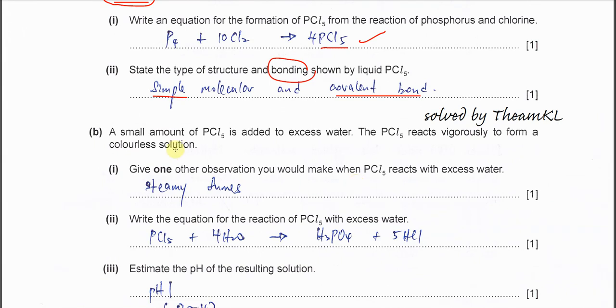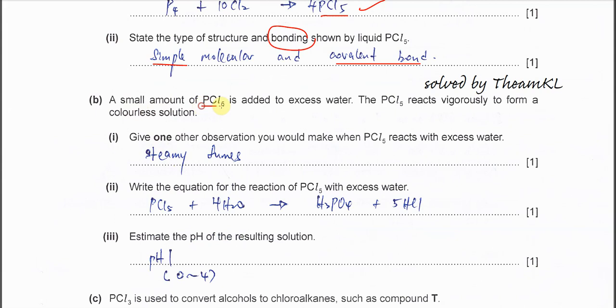Part B. A small amount of PCl5 is added to excess water. The PCl5 reacts vigorously to form a colorless solution. Give one other observation you would make when PCl5 reacts with excess water. The best answer is steamy fumes, which is HCl. When HCl forms, you see white fumes or steamy fumes. This is the characteristic of the reaction between PCl5 and water.